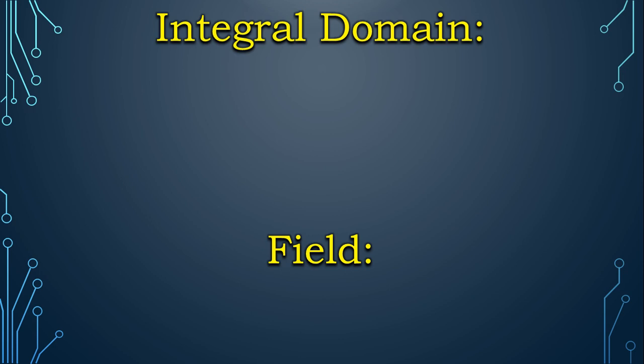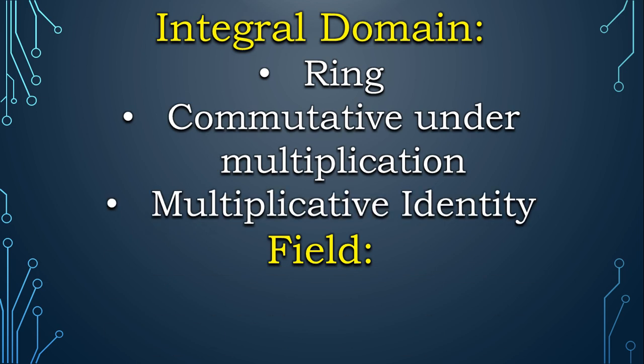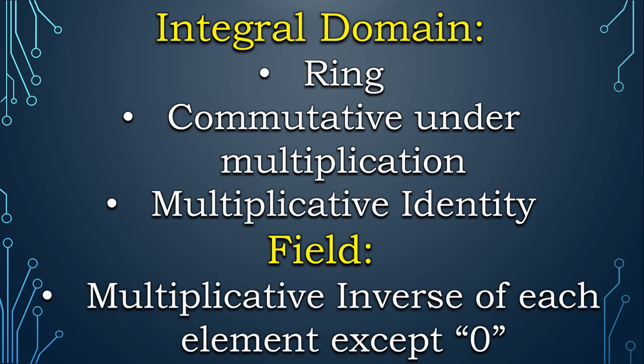Okay, let's compare the features of an integral domain and a field. So integral domain is a ring. It is commutative under multiplication and includes multiplicative identity as well. The same features lie in the field too, except one additional feature that all the elements have their multiplicative inverses in the ring except zero, as zero has no multiplicative inverse. So this is the only feature we need to prove that a finite integral domain has.